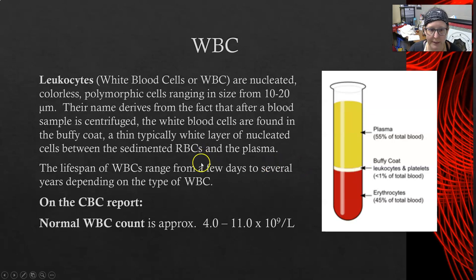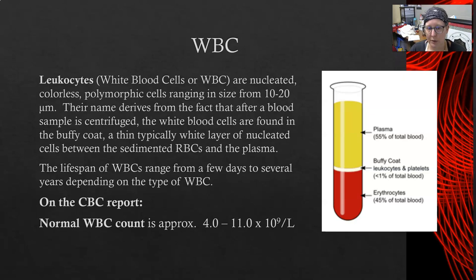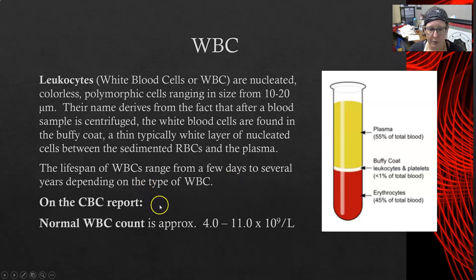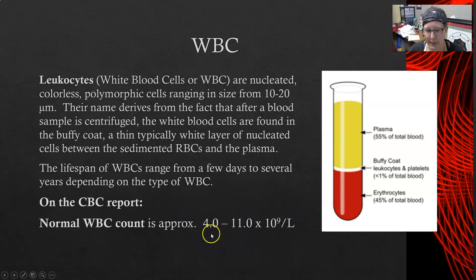The lifespan of an average WBC will range from a few days to several years depending on the type. Neutrophils can last just a few hours to a few days, whereas lymphocytes can persist for many years. On a CBC report, the normal WBC count is approximately 4 to 11 times 10 to the 9 per liter, though these ranges can vary slightly by region and by analyzer.